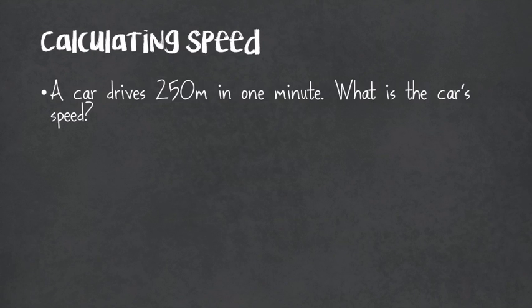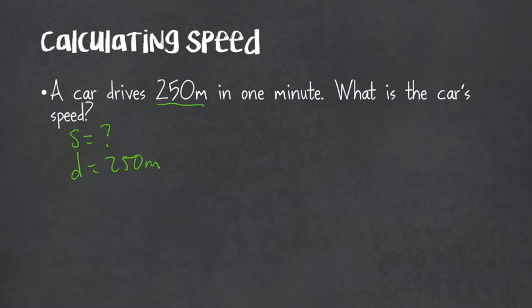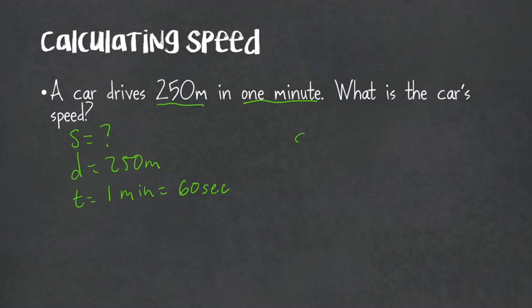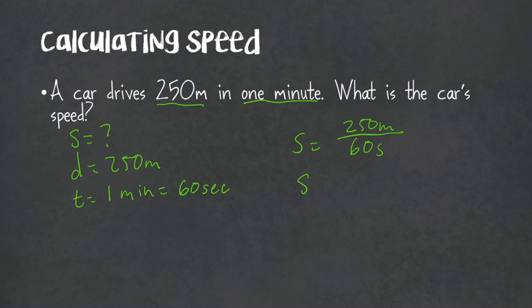So let's do an example. A car drives 250 meters in one minute. What is the car's speed? We are looking for speed. Our distance equals 250 meters, and our time equals one minute, which we can convert to 60 seconds. So speed equals 250 meters divided by 60 seconds, which gives us about 4.17 meters per second.